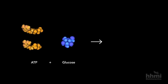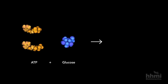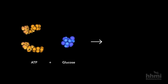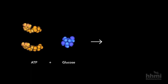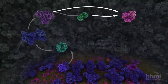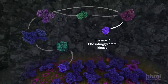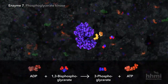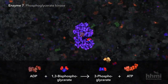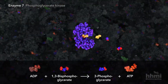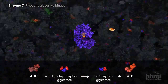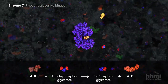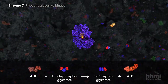Halfway through glycolysis, the cell has consumed two ATP molecules breaking down glucose, and is now ready to capture energy in return. The seventh enzyme transfers a phosphate group from 1,3-bisphosphoglycerate to ADP, creating chemical fuel, ATP.